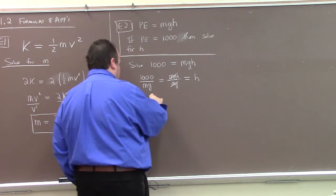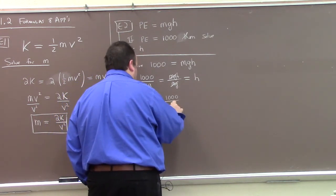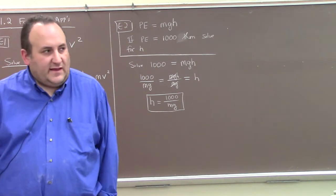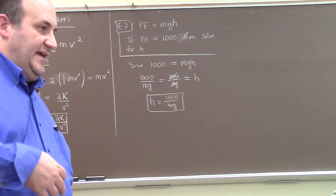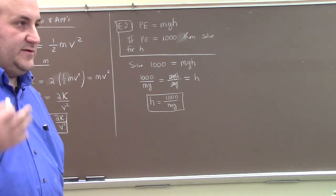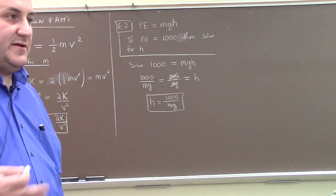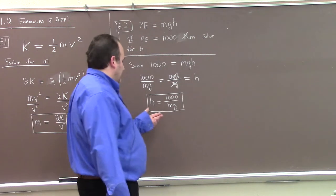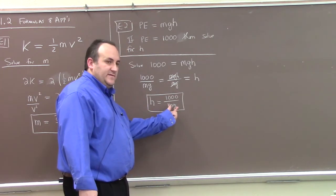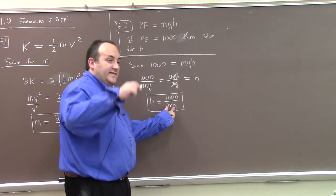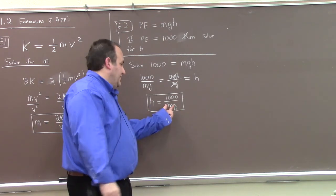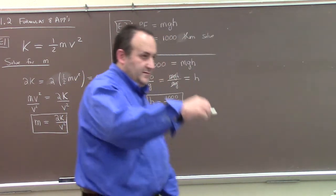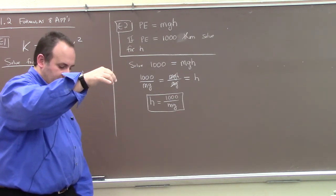So h equals 1,000 over mg. Unless they give you more information, that would be the answer. If I also knew the mass was 10 kilograms and g is 9.8 meters per second squared, I could calculate h. This makes sense — the smaller the mass, the higher h has to be to achieve 1,000 units of potential energy. If your mass is really big, you don't have to hold it as high to get that much energy.